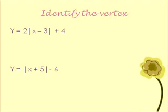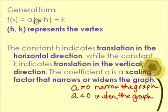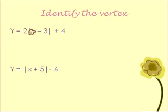We're going to identify the vertex of these functions. Looking at the first one: y equal to 2 times the absolute value of x minus 3, plus 4. Notice in the formula that it's minus h plus k. When writing the vertex from the formula, the minus sign is part of the formula, so our vertex h value will actually be a positive 3 — you want to be thinking opposite signs, but only for the h value. So my vertex is positive 3 and positive 4.